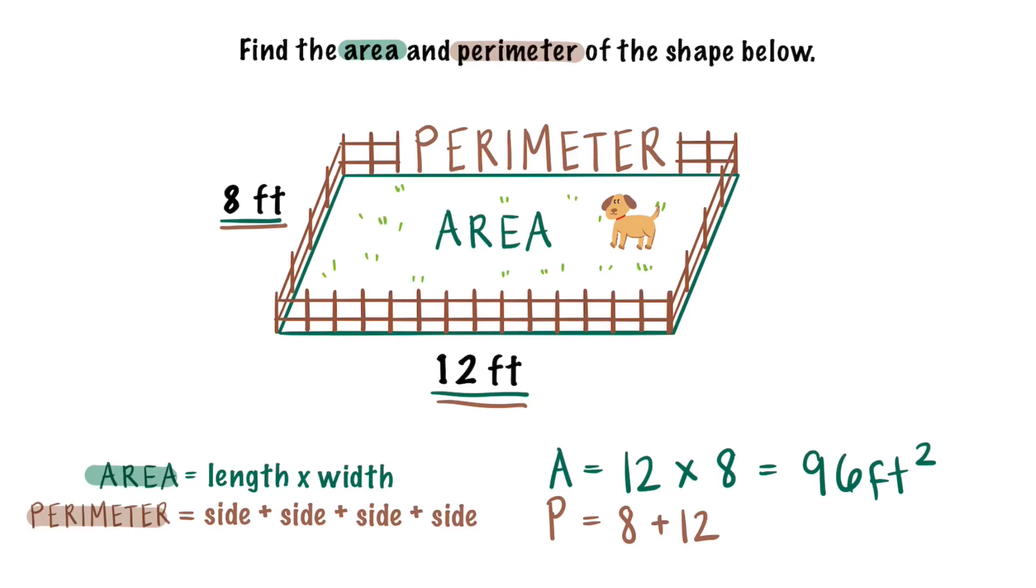Now since this is a rectangle and one side is 8 feet, the opposite side is also going to be 8 feet. So we need to add that plus 8. If the bottom is 12 feet, the top is also going to be 12 feet. So we need to add that plus 12.